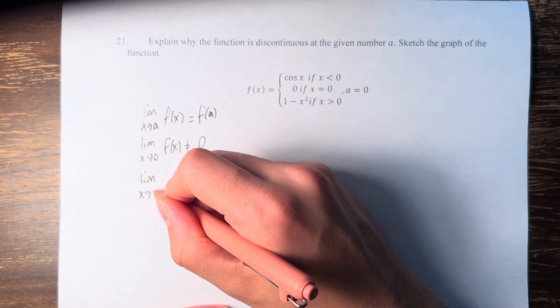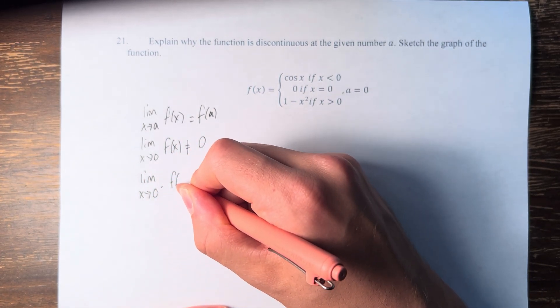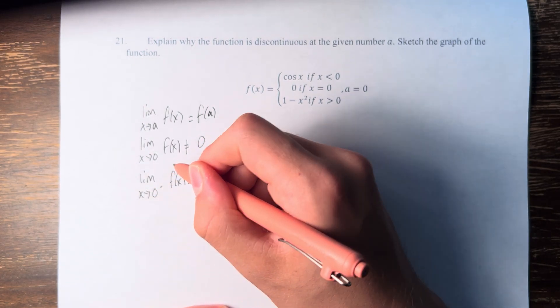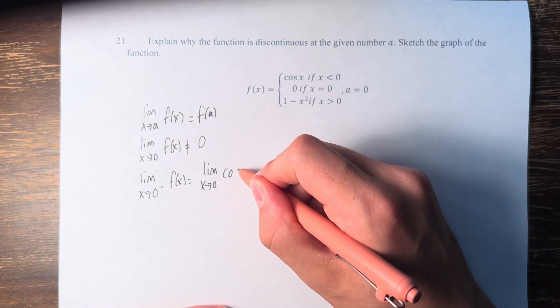So first we have the limit as x approaches 0 from the left. This is the limit as x approaches 0 from the left, which means values smaller than 0, so that means cosine of x.